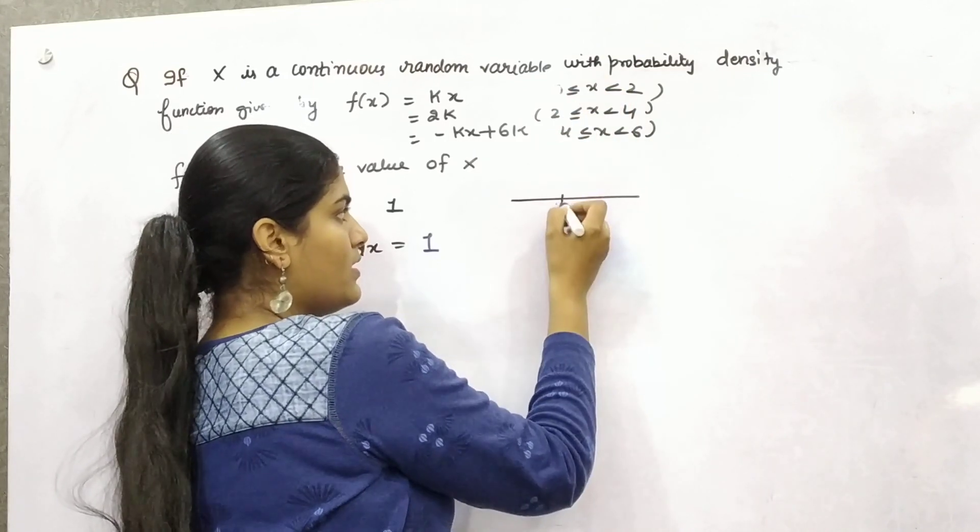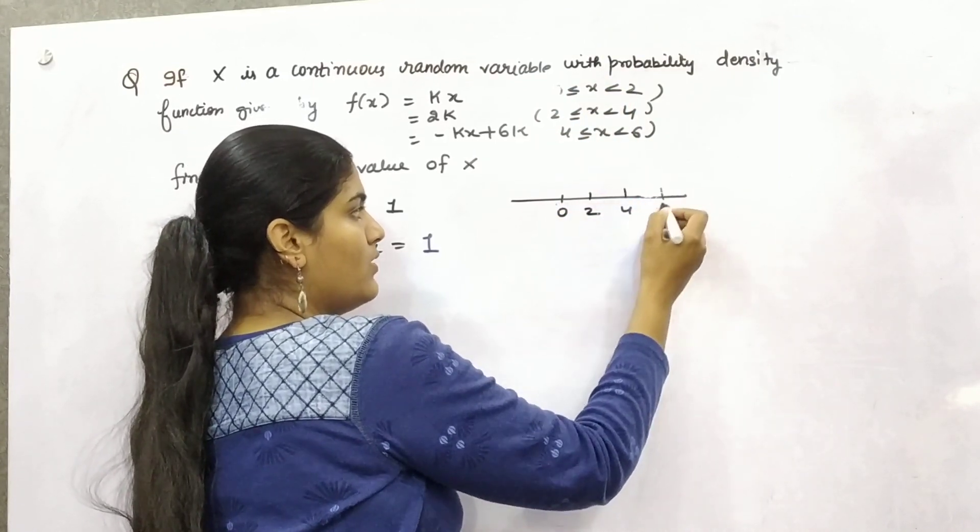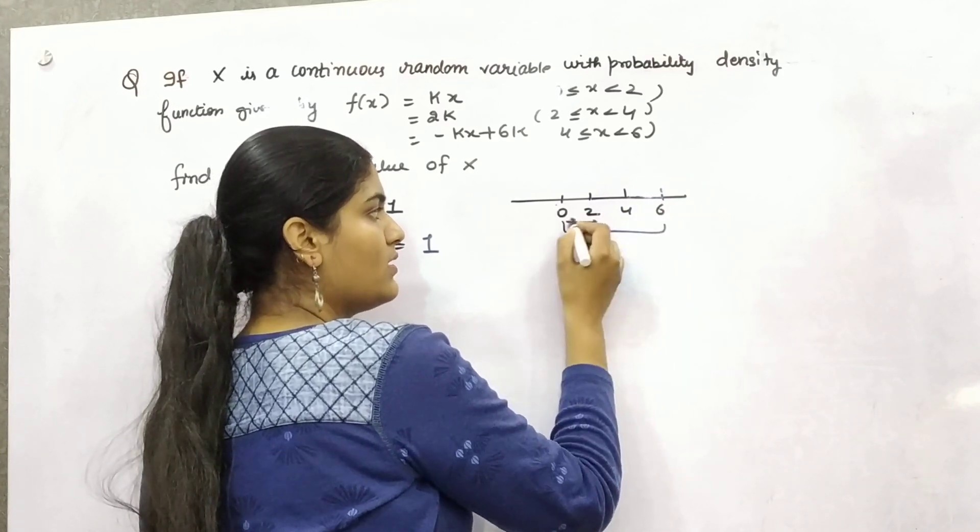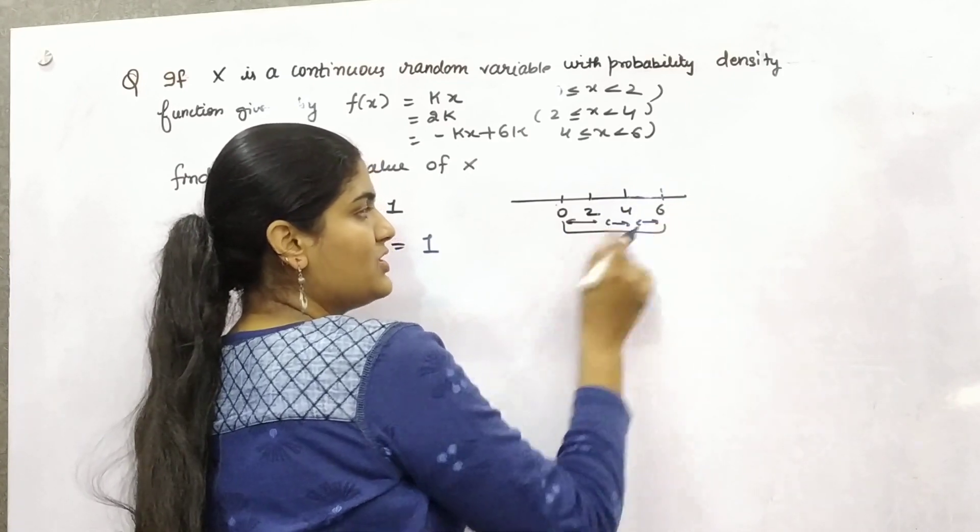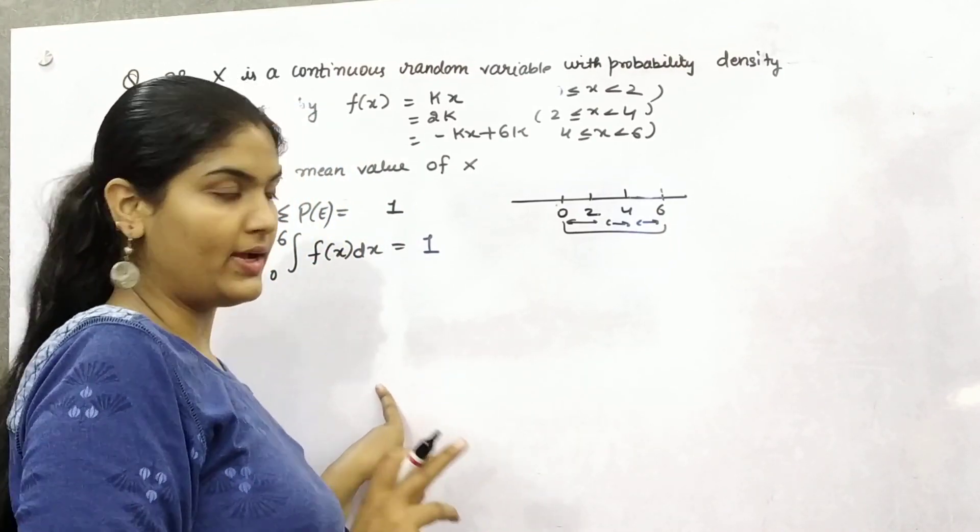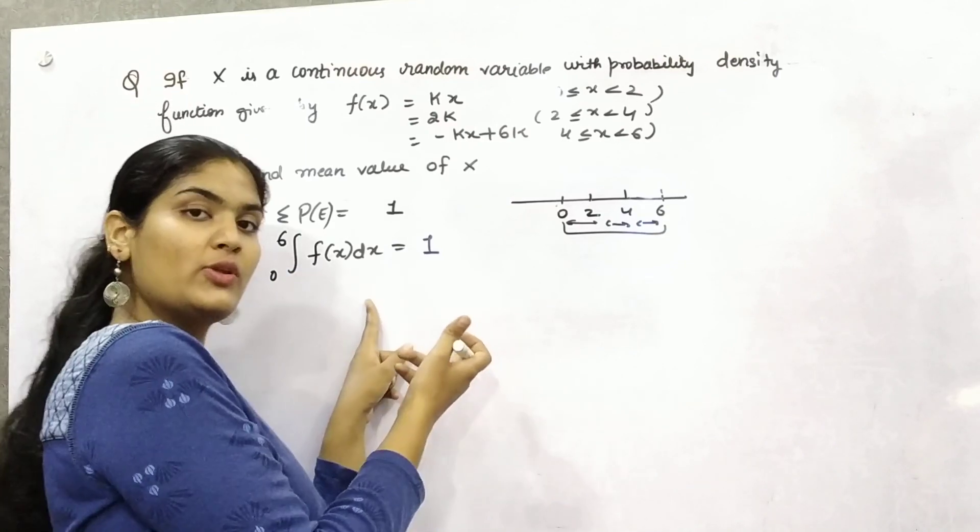It is from 0 to 2, then 2 to 4, 4 to 6. So if you take the sum of each and every interval, then that will be a total probability and that should be equal to 1.